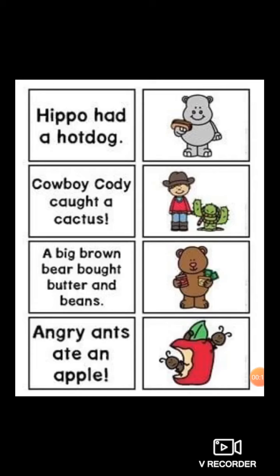Second example: 'Cowboy Cody caught a cactus.' In each word the first letter C is repeated, so it's alliteration. Third: 'A big brown bear bought butter and beans.' Each word's first letter is repeated more than twice. Fourth: 'Angry ants ate an apple' — the first letter A is repeated more than twice, so it's alliteration.